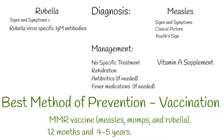Both diseases are self-limiting and prognosis is good in most cases. However, measles' serious complications can be fatal, while rubella infection in pregnant women can be fatal for the baby.